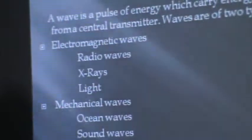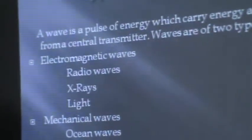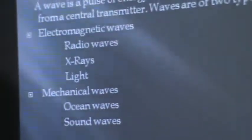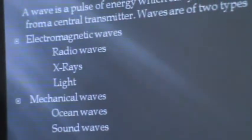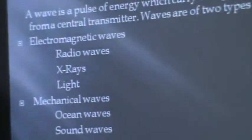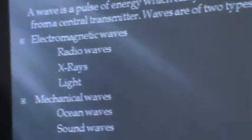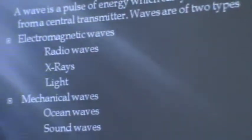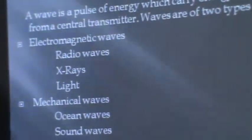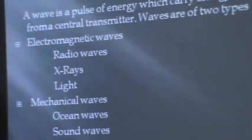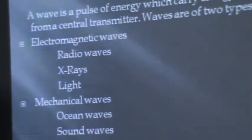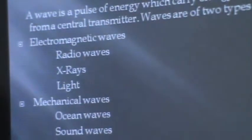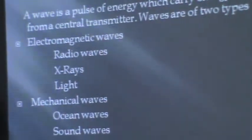Electromagnetic waves are also labeled as transverse waves, and these travel from one place to another without requiring a medium in between — meaning they can propagate even through a vacuum, like radio waves and X-rays. Mechanical waves are also called longitudinal waves, and they require a medium for propagation. Examples include water waves as well as sound waves.